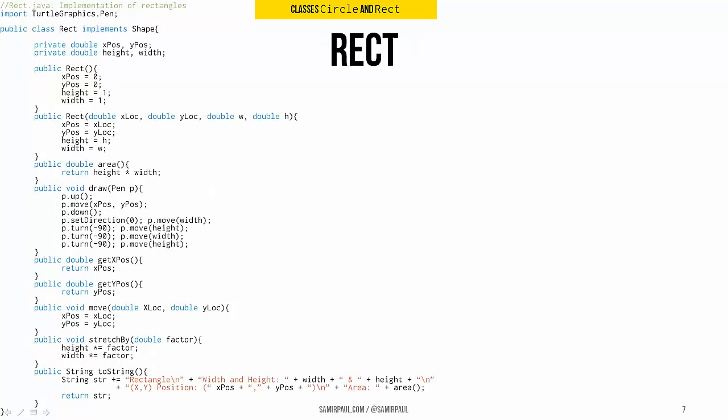Here we've got the rectangle class, it's pretty similar. We've got instance variables x position and y position. Here instead of radius, we have two instance variables, height and width, and we've got constructors as well for Rect, both the no-arg and one that takes all the instance variables as parameters.